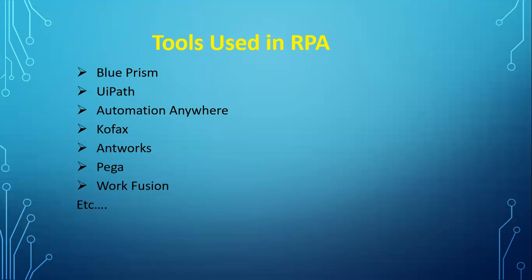Before requirement gathering, the BA is involved in the pre-discovery phase. Here he understands the business process and what the client expects — how many full-time employees work on the process, and a high-level process overview. He takes notes from SMEs, then prepares further questions about SLAs, average handling time, whether digitalized documents or invoice processes are involved, whether OCR is needed, and where human intervention is required.